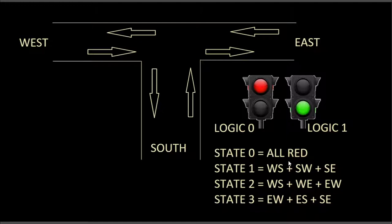So we have an all red state, and then state one is when south to east and south to west get a green light. When south can go to east and south can go to west, it means west can also come to south — that is also a clear path. So west to south, south to west, and south to east — that's the first state.